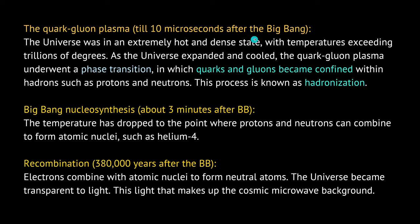About 10 microseconds after the Big Bang, the universe was really hot and really dense, and a phase transition happened in which quarks and gluons became confined within hadrons — what we call today protons and neutrons. This whole process is known as hadronization. Then about three minutes later, the temperature of our universe had dropped to the point that protons and neutrons could combine to form atomic nuclei, such as helium-4.